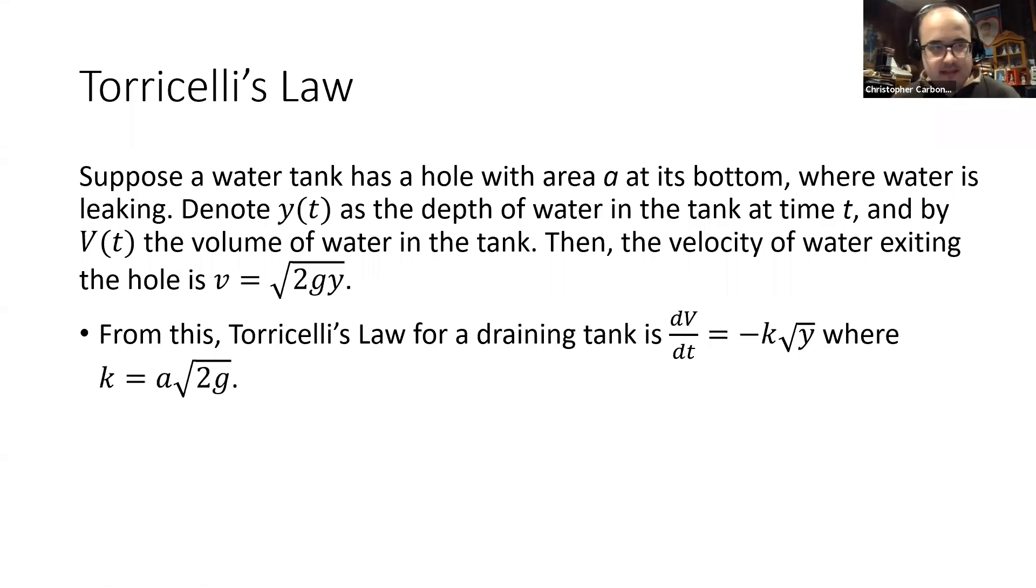Hello, class. Last time we had briefly talked about Torricelli's Law as an application of a separable differential equation. We suppose a water tank has a hole with area A at its bottom where water is leaking. We denote y(t) as the depth of water in the tank at time t, and by V(t) the volume of the water in the tank. Then the velocity of the water exiting the hole is v equals the square root of 2 times g times y, where g is that gravitational constant.